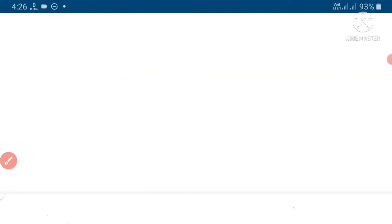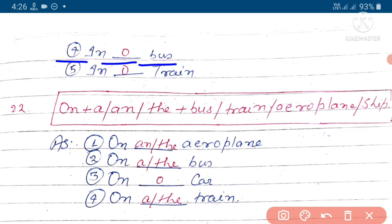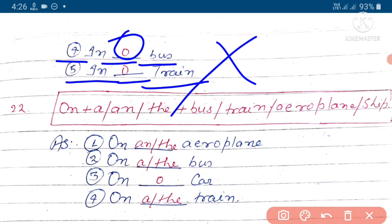Next hai - 'in bus': formula mein, structure mein bus nahi tha, ishi liye yahan zero article ka yuj hoga. 'In train' - structure mein train nahi tha, ishi liye zero article ka yuj karenge.